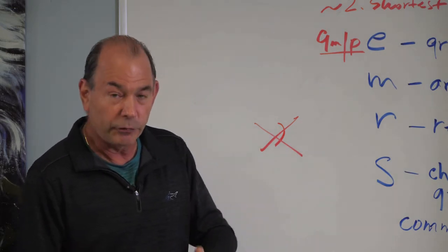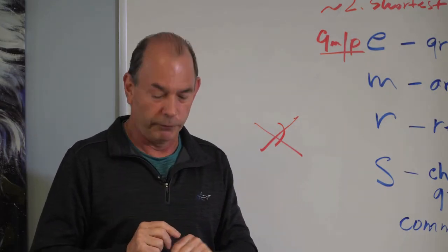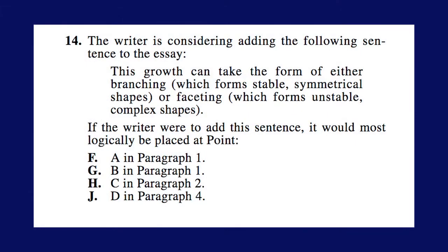How come? Because although they're longer, they tend to boil down to one or two key words in the question. For example, look at number 14. The writer is considering adding the following sentence to the essay. This growth can take the form of either branching, which forms stable symmetrical shapes, or faceting, which forms unstable complex shapes.